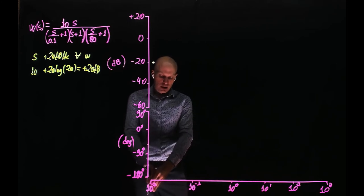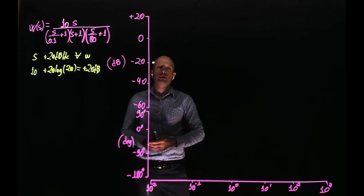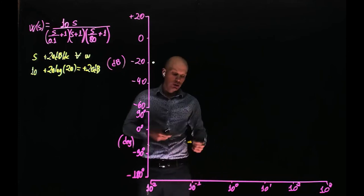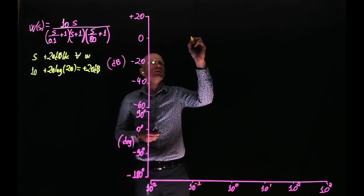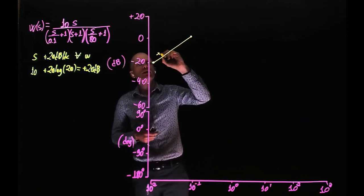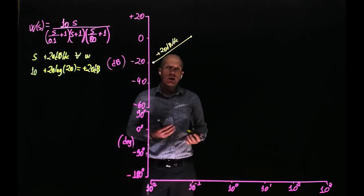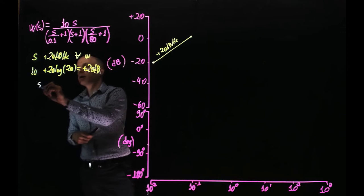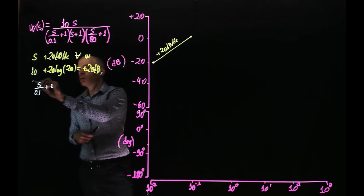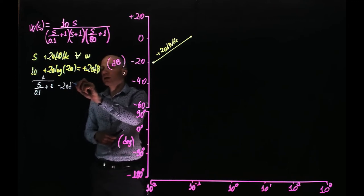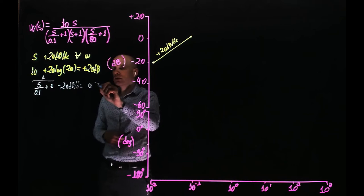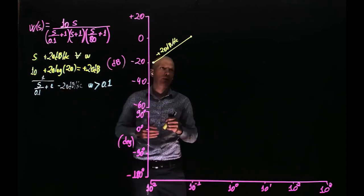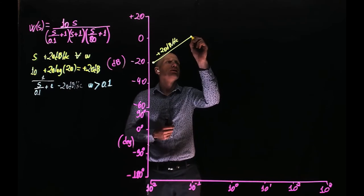The only thing acting between 10 to the power of negative 2 and negative 1 is the zero at the origin, which adds a slope of plus 20 dB per decade. So at 0.1, we should be 20 dB higher than negative 20, so we go to zero. This slope is plus 20 dB per decade. Now when the frequency is 0.1 radians per second, we have this pole at (S/0.1 + 1), which adds a slope of negative 20 dB per decade for frequencies greater than 0.1. So the slope that was plus 20 dB per decade becomes zero, and it will remain at zero up to the next cutoff frequency.